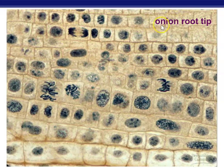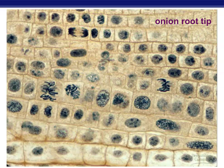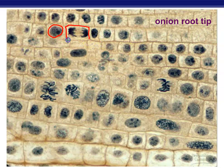An onion root tip is another example used to observe mitosis — root tip squashes are good for looking at mitosis in plant cells. You'll find a lot of cells dividing there because roots tend to grow continuously, whereas other parts of the plant aren't actively growing all the time. You can see most of these cells are in interphase, and here is a good example of anaphase — you can see the chromatids being pulled apart.